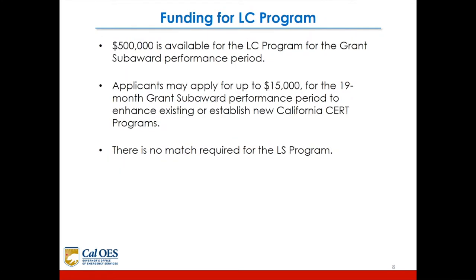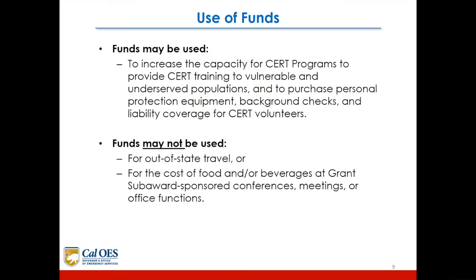$500,000 is available for the LC program for the grant subaward performance period. Applicants may apply for up to $15,000 for the 19-month grant subaward performance period to enhance existing or establish new California CERT programs. There is no match required for the LC program. Funds may be used to increase the capacity for CERT programs to provide CERT training to vulnerable and underserved populations, and to purchase personal protection equipment, background checks, and liability coverage for CERT volunteers. Funds may not be used for out-of-state travel or for the cost of food and/or beverages at grant subaward-sponsored conference meetings or office functions.